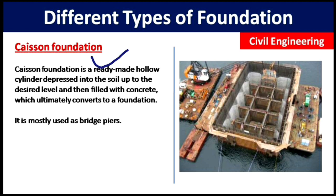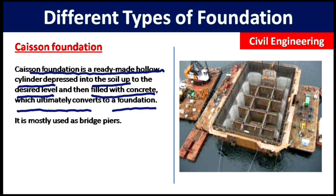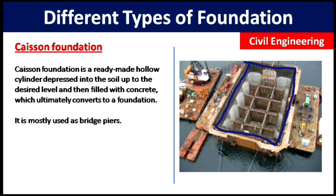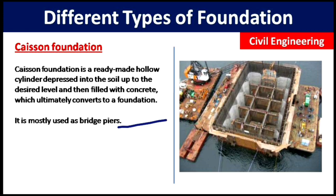The next type is caisson foundation, which is generally seen in bridges. A caisson is a ready-made hollow cylinder depressed into the soil up to the desired level and then filled with concrete, which ultimately becomes the foundation. It is mostly used as a bridge pier. First a hollow cylindrical or rectangular caisson is made, concrete is poured into it, and then the superstructure is built on top.